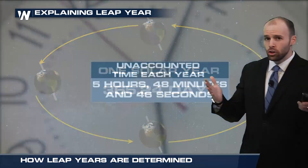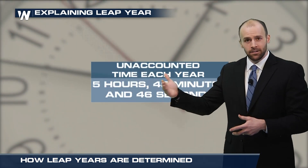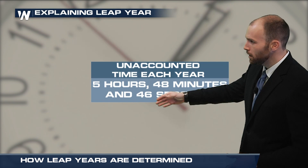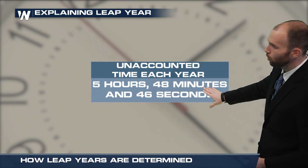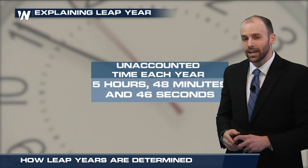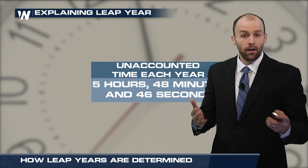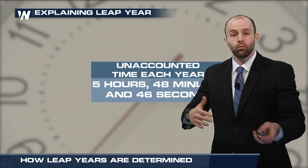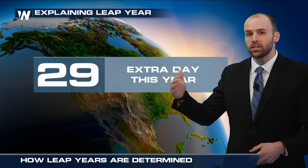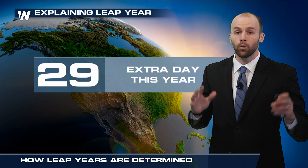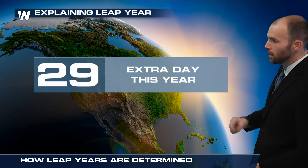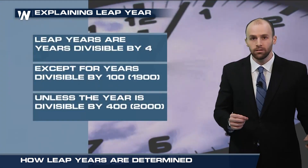So each year, if we were not to add a day, that would throw time off. There would be an unaccounted five hours, 48 minutes, and approximately 46 seconds of unaccounted time each year. So roughly every fourth year, we tack on an extra day at the end of February — you get an extra day.